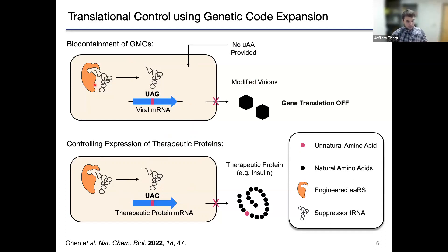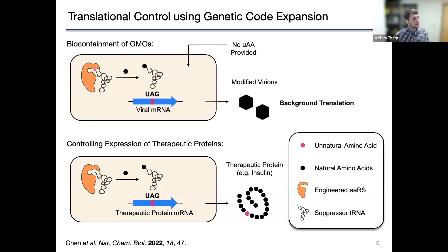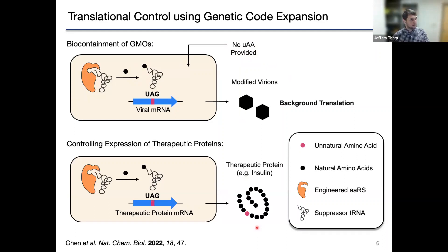The problem with these systems is that engineered aminoacyl tRNA synthetases are not perfect enzymes. Although they prefer unnatural amino acids as substrates, very often in the absence of their preferred substrate they can recognize natural amino acids to some degree. In the absence of an unnatural amino acid, the enzyme will attach a natural amino acid onto the suppressor tRNA, allowing low-level background translation. In some cases this background can be quite significant, which can prohibit us from using genetic code expansion to control gene expression in sensitive applications such as biocontainment or controlling the expression of therapeutic proteins.